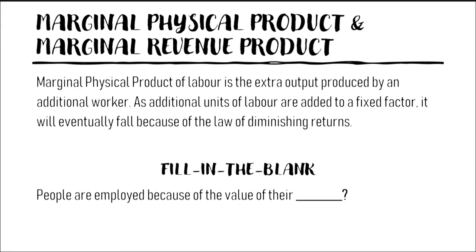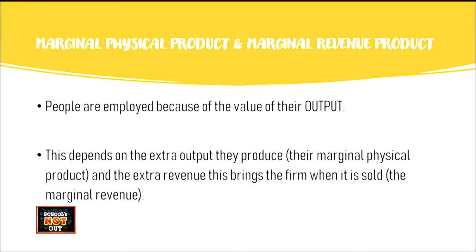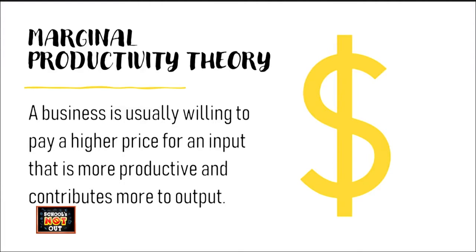People are employed because of the value of their output — not looks or personality, but how much output they can produce. The output workers produce will be sold, bringing the business revenue. A business is willing to pay a higher price for an input that is more productive and contributes more to output. The business will pay higher wages to a worker who produces more output, because that worker brings more revenues to the firm.